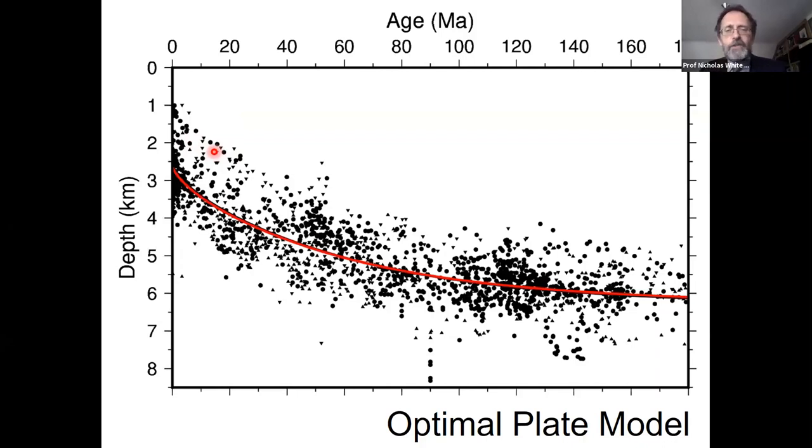You can see the seabed, the sediment basement interface, and the Moho. You can use these crisp images to correct for sediment thickness variation and crustal thickness variation and get accurate measurements of residual depth anomalies, which we refer to as a proxy of dynamic topography. All these dead flies on this picture are measurements of age-depth throughout the oceans.